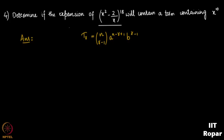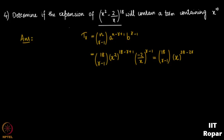Applying the formula with n = 18, a = x², b = −2/x: T_r = 18C(r−1)·(x²)^(18−r+1)·(−2/x)^(r−1). Simplifying: 18C(r−1)·x^(38−2r)·(−2)^(r−1)/x^(r−1), which gives 18C(r−1)·x^(39−3r)·(−2)^(r−1).